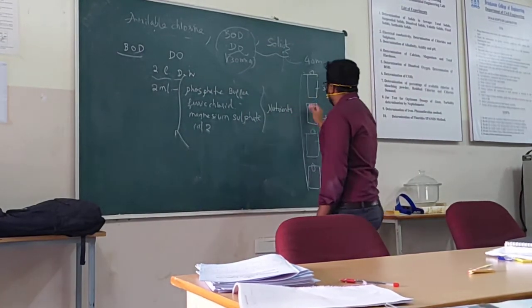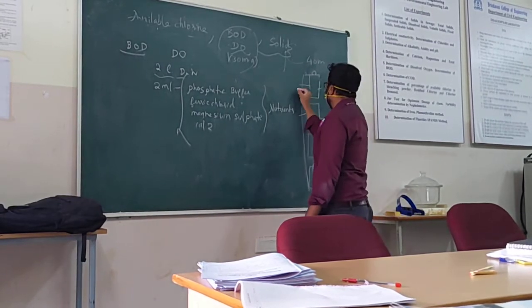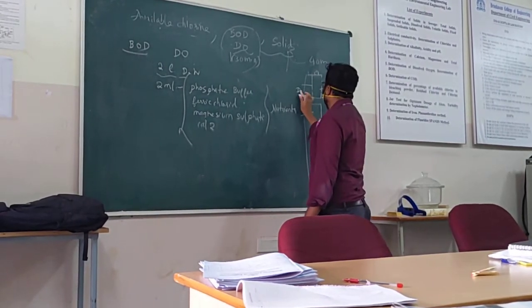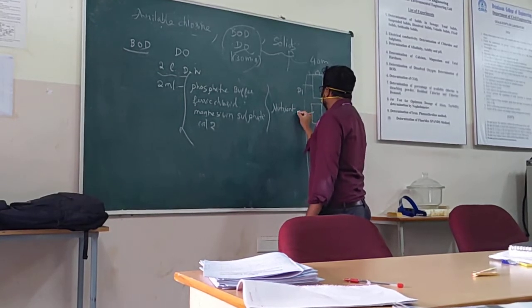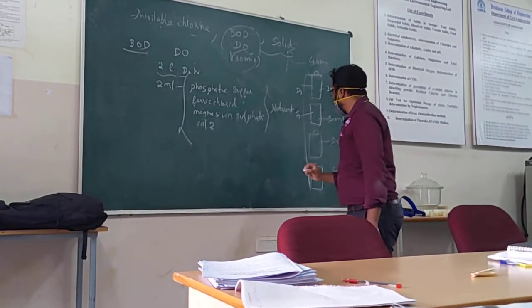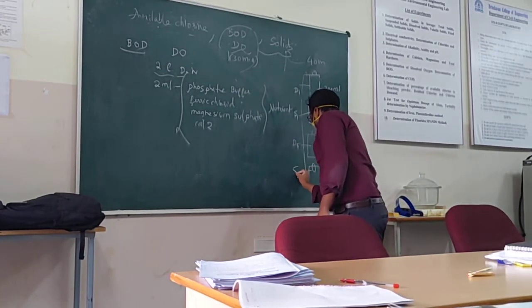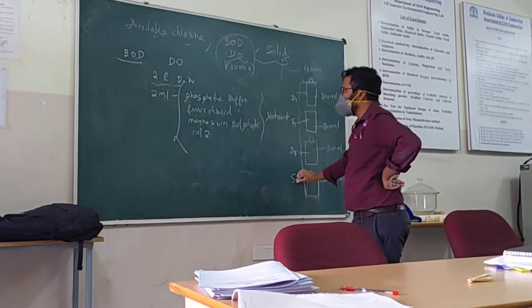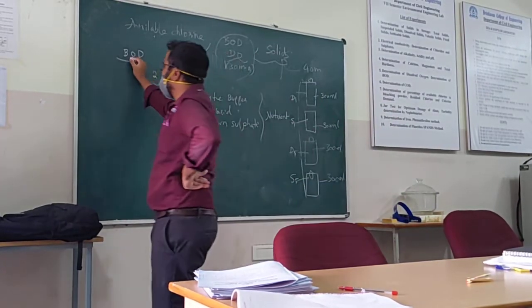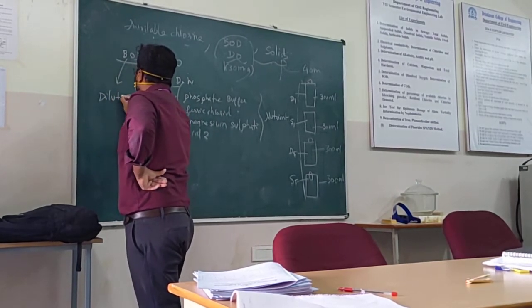Now, the bottles I will label as D1 and this one as S1, and this is D5 and this is S5. So what this means is to find the BOD, the method we are using is dilution.